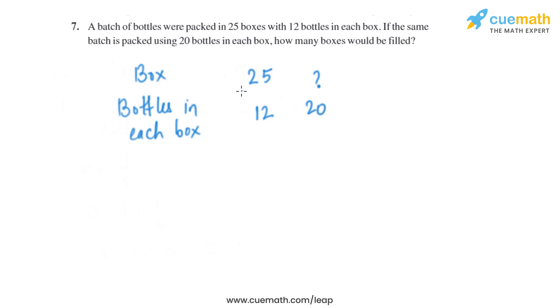The number of boxes given in the question is 25 and 12 bottles are there in each box. When we increase the number of bottles in each box to 20, the number of boxes will be less, which means they are in inverse proportion. So let's take the number of boxes as A, bottles in each box as B.